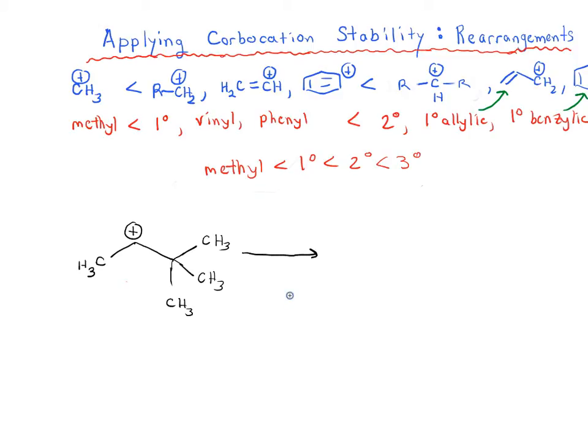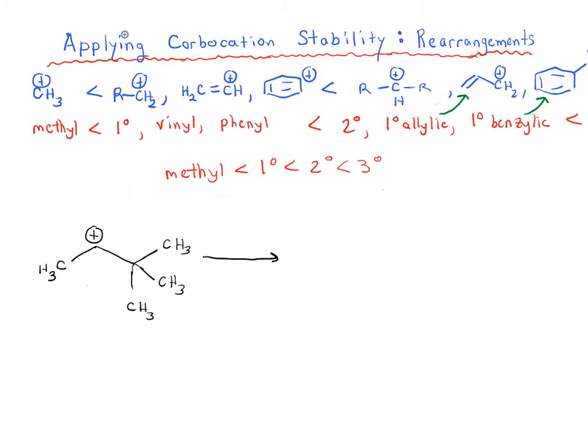We've been talking about rearrangement reactions. In the last video we went through 1,2-hydride shifts, and in this video I want to go through 1,2-alkyl shifts, which are related to hydride shifts but can have a few more complications. We're going to go through several examples of alkyl shifts. Remember, the key thing to keep in mind for rearrangement reactions is always carbocation stability. This is the most important thing - we always want to go from a less stable carbocation to a more stable carbocation.